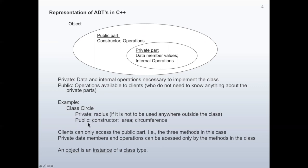In the public part, we have constructor, area, and circumference. The constructor is used to create an object. Clients can only access the public part — that is, the three methods: circumference, area, and constructor. Private data members and operations can be accessed only by the methods in the class.